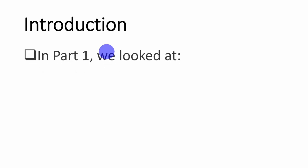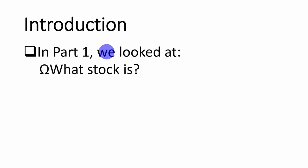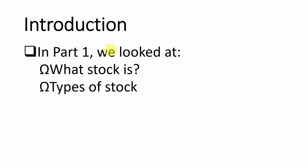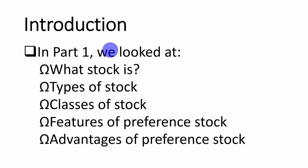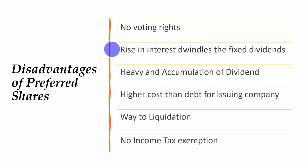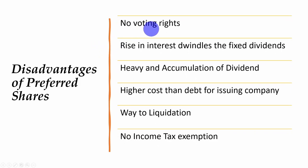In the first part, we looked at what is stock. We looked at the type of stock, the classes of stock, and how stocks are classified. We also looked at features of preference stocks or preferred stock, and we looked at the advantages of preferred stock. We didn't talk about the disadvantages, but briefly, the preferred stock has the following disadvantages.